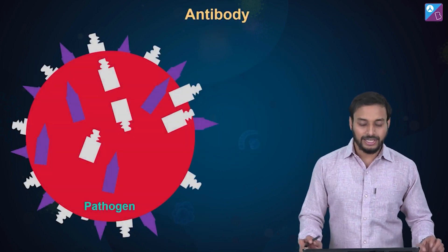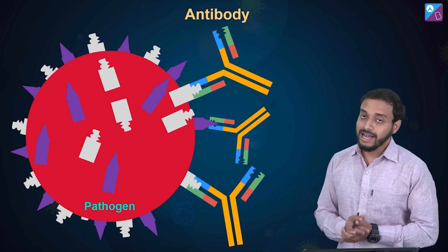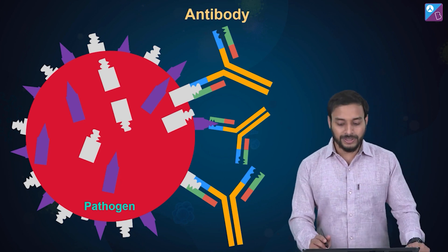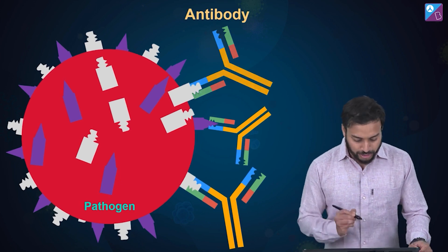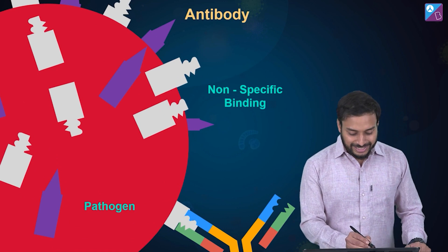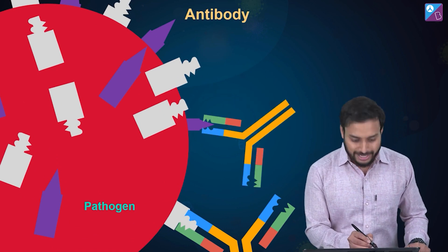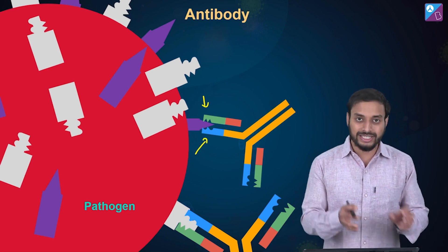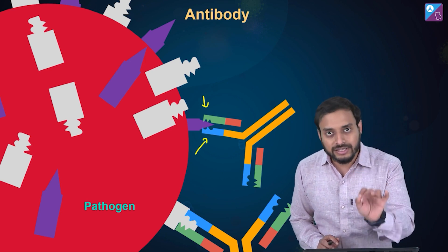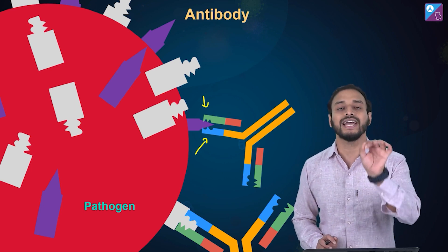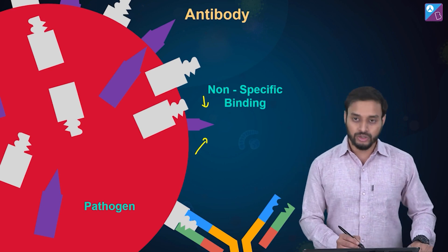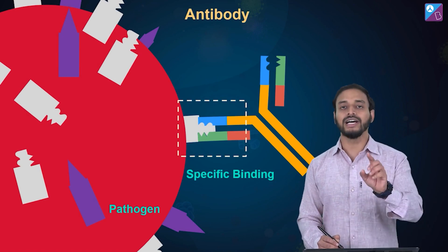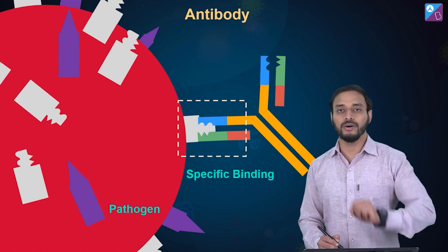Now let's look at the antigen binding site. The binding can be of two types: specific and non-specific. Initially, an antibody may try to bind but fail — that is non-specific binding and it does not get retained. Antibodies are specific to specific antigens. Specific binding is retained and further triggers the immune response of our body.